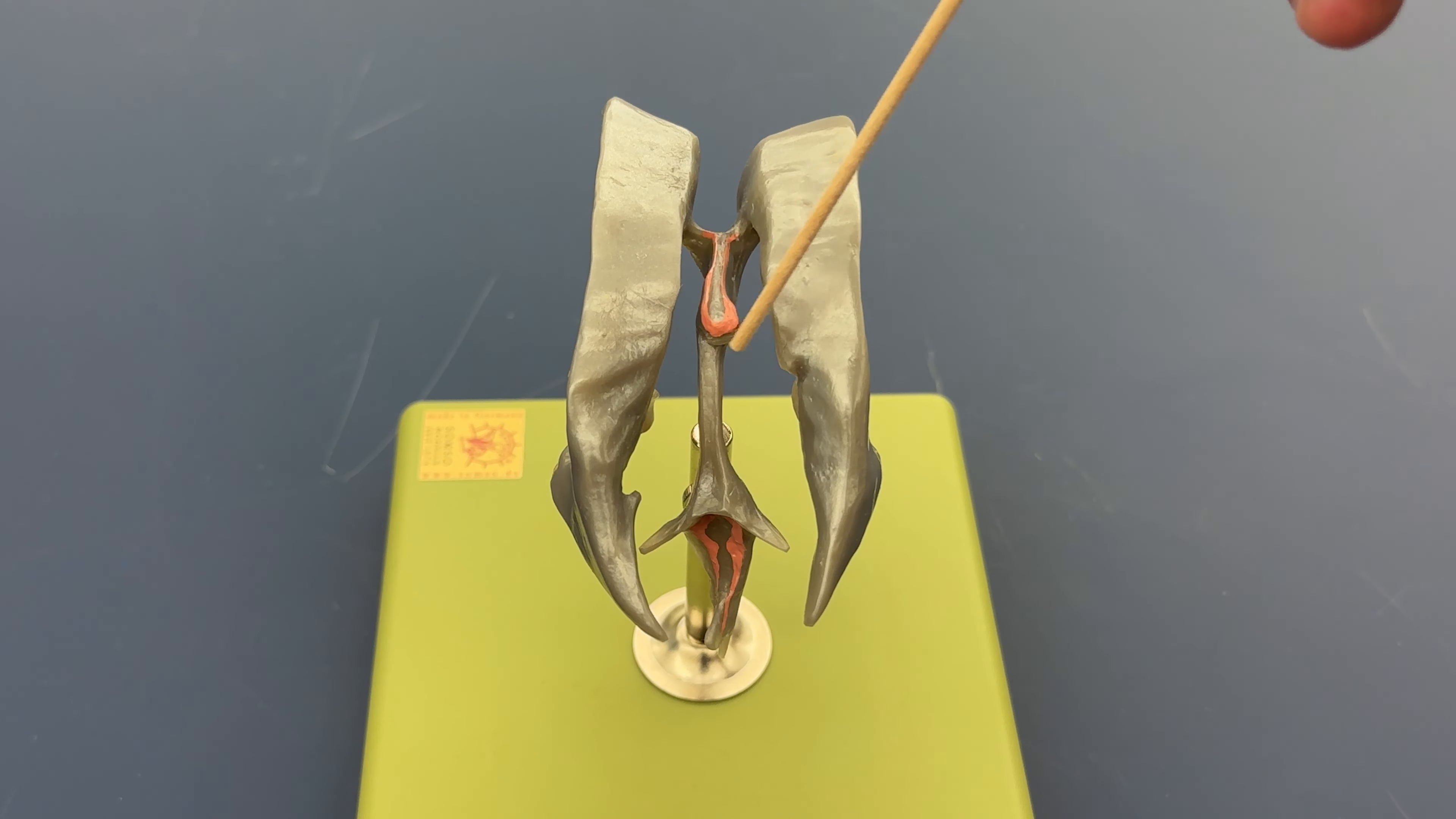We have the third ventricle, at least the superior aspect of the third ventricle here. And we can see that pink choroid plexus lining a portion of that third ventricle as well.